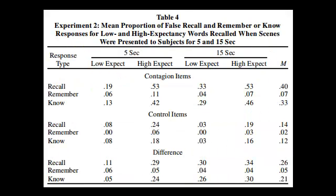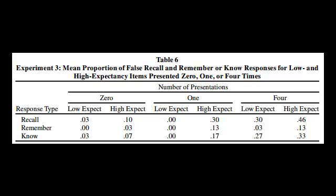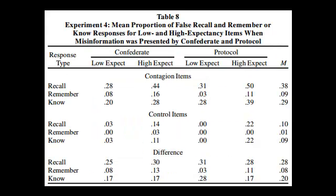In Experiment 2, the researchers varied how long subjects were exposed to the six scenes. In Experiment 3, they varied the number of times non-existent high-expectancy items were presented — showing that even without a Confederate mentioning them, subjects will recall these items. In Experiment 4, the researchers compared the effects of a virtual Confederate, where the subject was told the responses of an absent Confederate. The result showed no statistically significant difference, but having responses read to you may be more effective than having the actual person present, even if this can't be stated with 95% certainty.